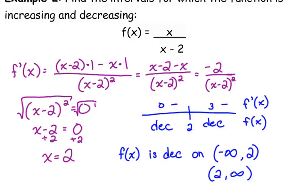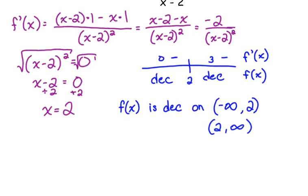So this function is decreasing from negative infinity to 2 and from 2 to infinity. That's all I got.